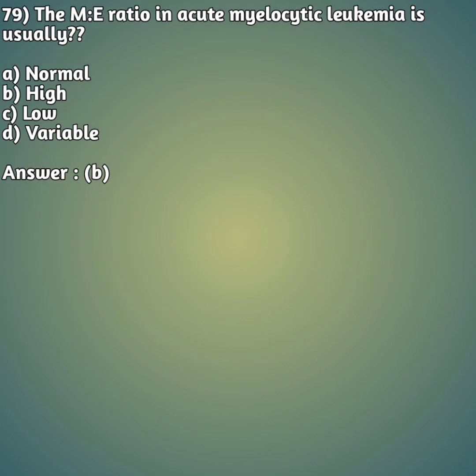Moving on to our 79th question: the M:E ratio in acute myelocytic leukemia is usually - option A: normal. Option B: high. Option C: low. Option D: variable. The right answer is option B - high. The M:E ratio refers to the myeloid to erythroid ratio. This ratio can vary in different leukemias such as ALL, CLL, AML, and CML, so you need to be very specific about which leukemia is being asked. In acute myelocytic leukemia, the M:E ratio will be high.